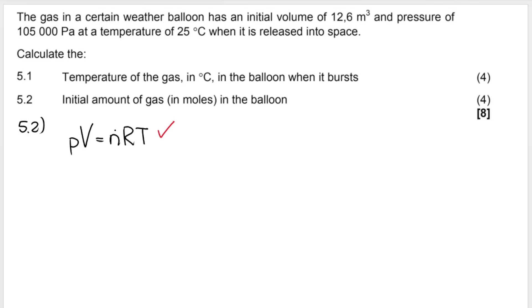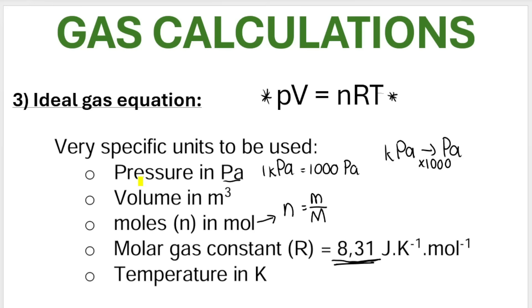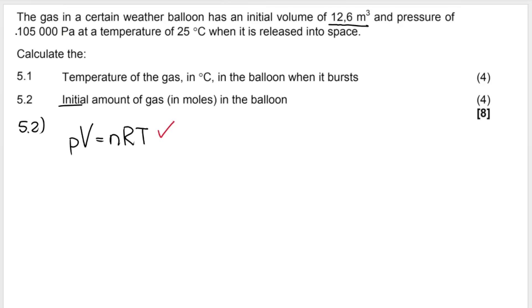Then we're looking for N. You need to substitute everything else in. They say the initial amount of gas. So we need to use the initial conditions. Here's the initial volume. And remember, when you use this formula, your volume has to be in cubic meters. Your pressure has to be in pascals. Your temperature has to be in Kelvin. So my pressure is in the correct unit, 105,000. My volume is in the correct unit, 12.6 equals N is what I'm looking for. R is a constant, 8.31.